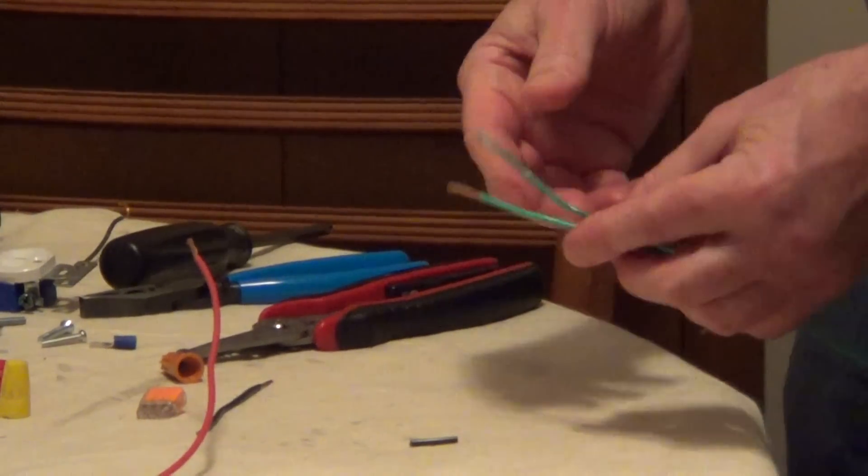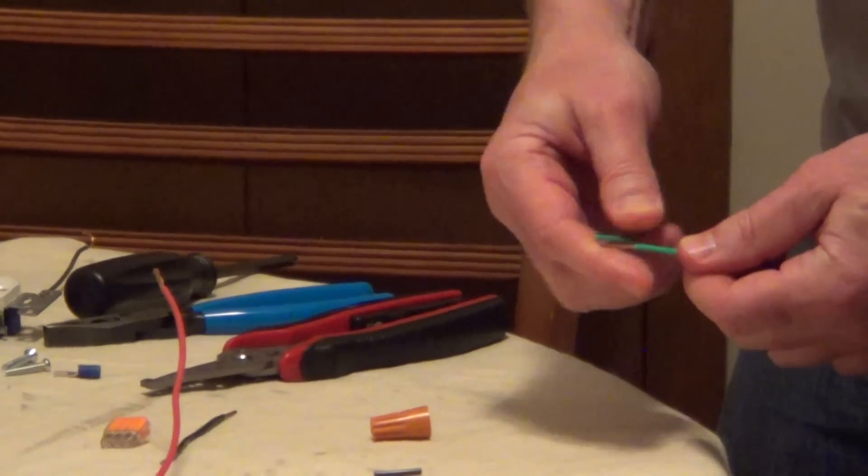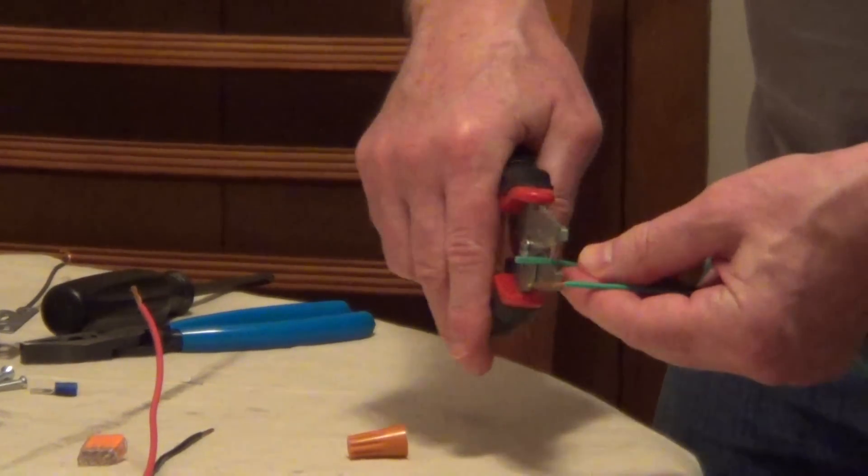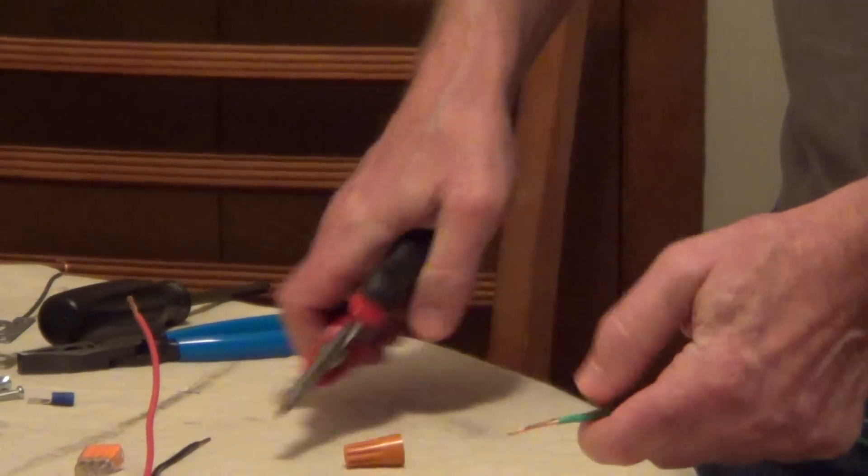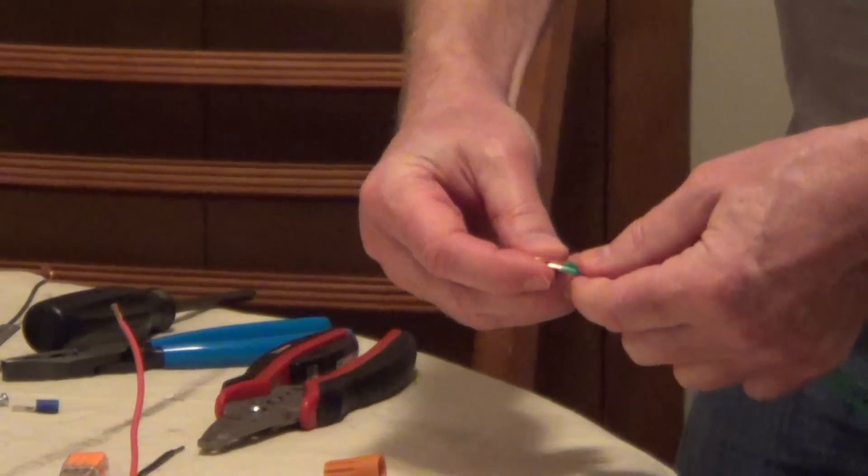Now, if you're connecting two wires or three wires together underneath a wire connector, you would only want to strip about a half an inch to five-eighths of an inch so that this exposed wire stays underneath the wire connector.